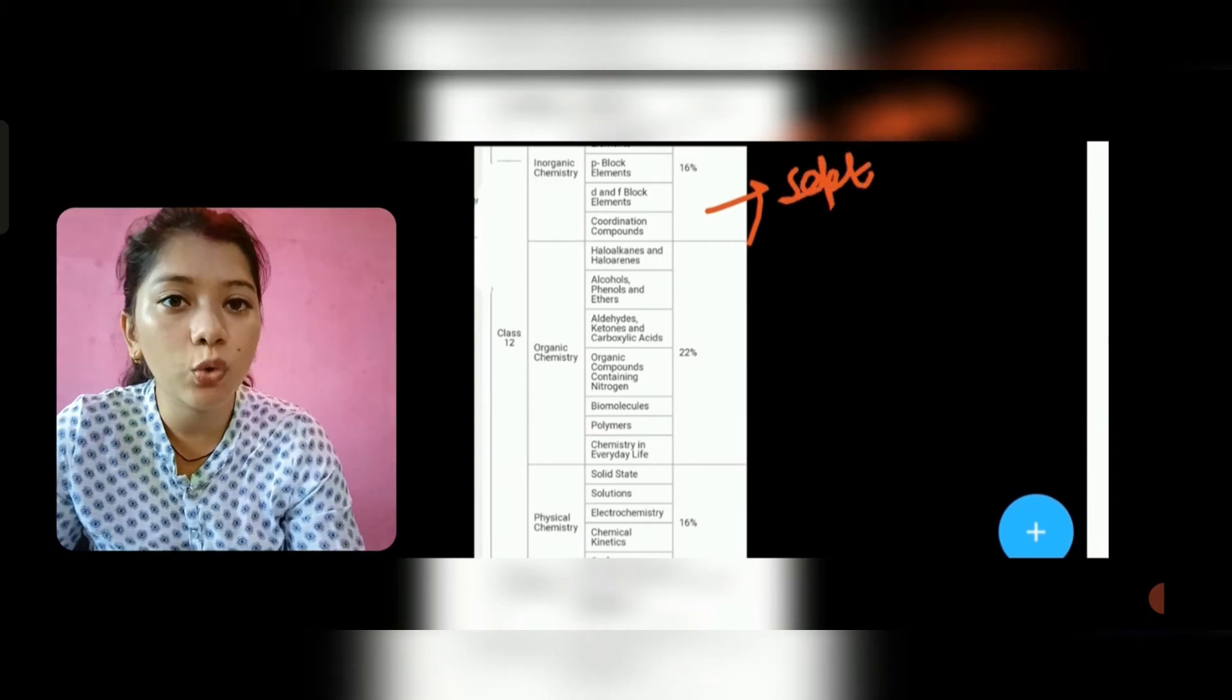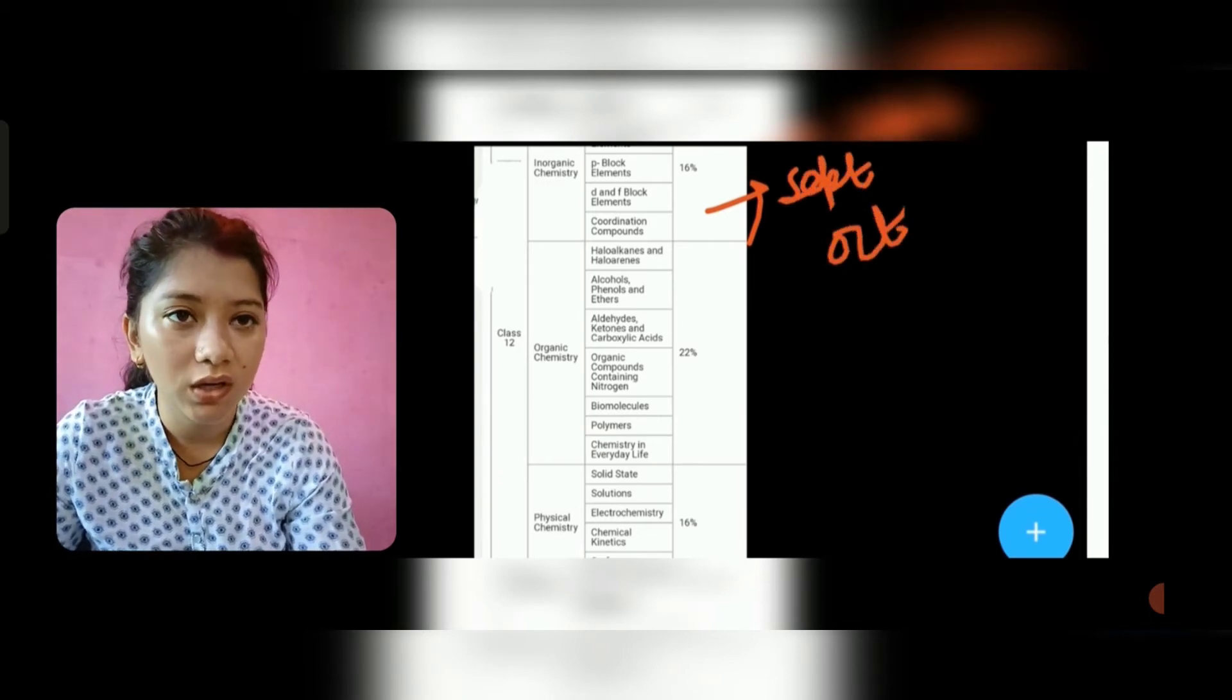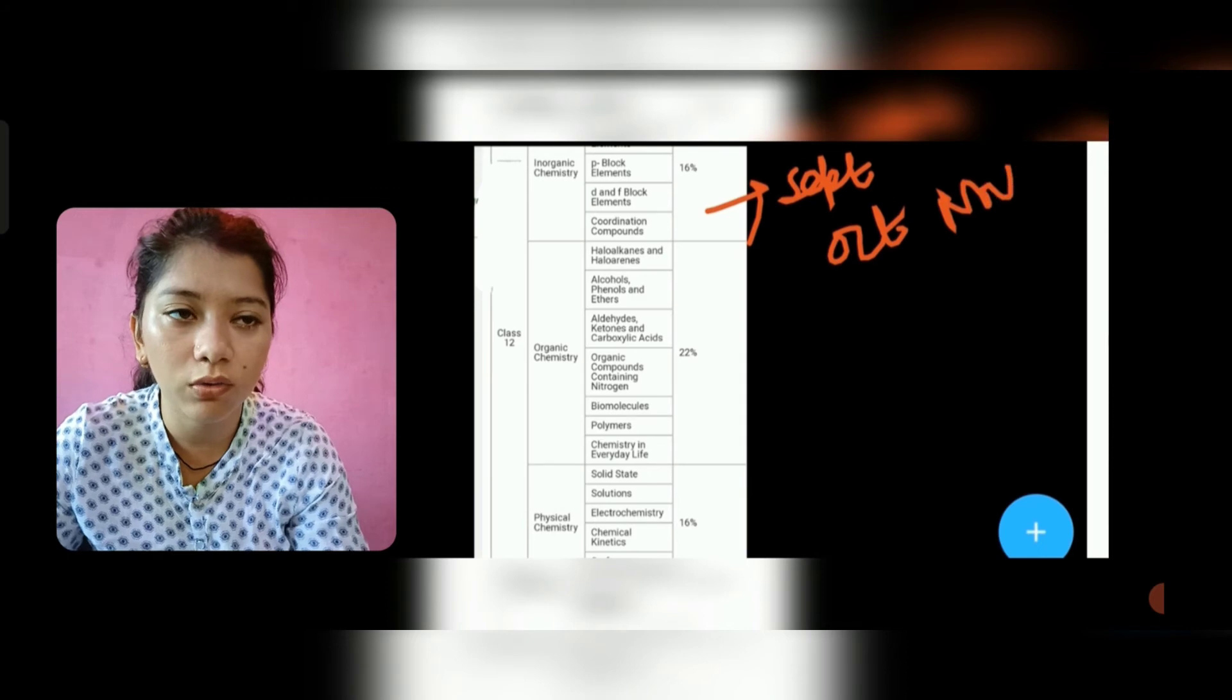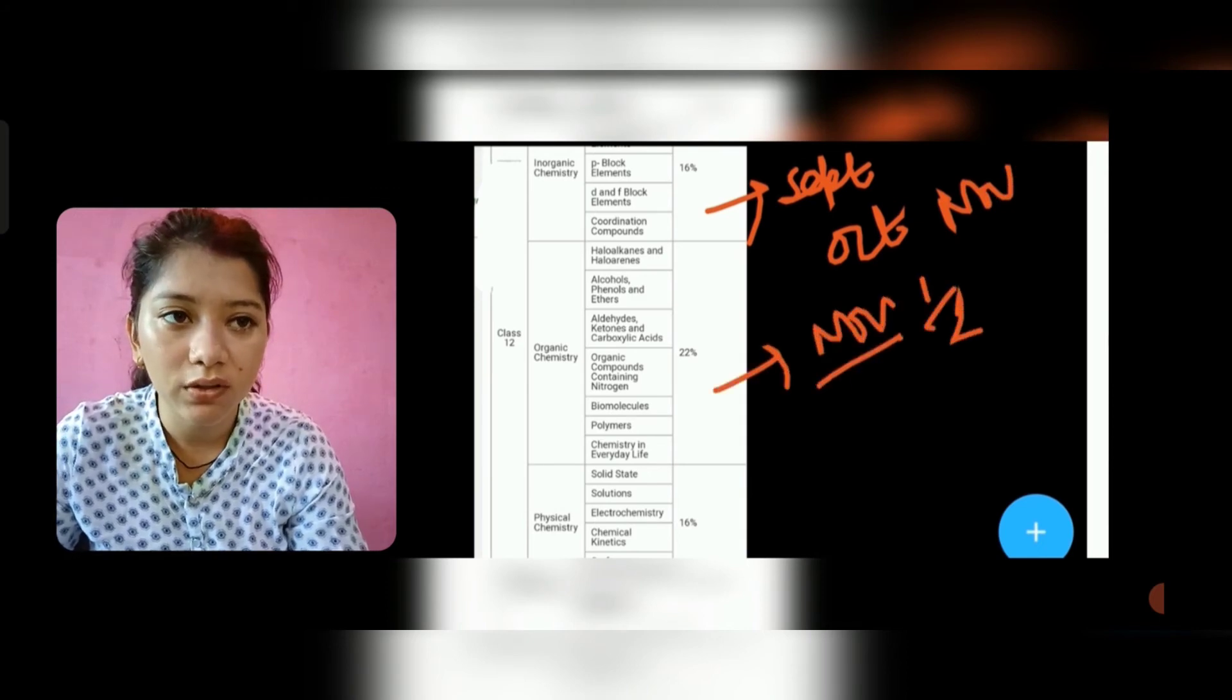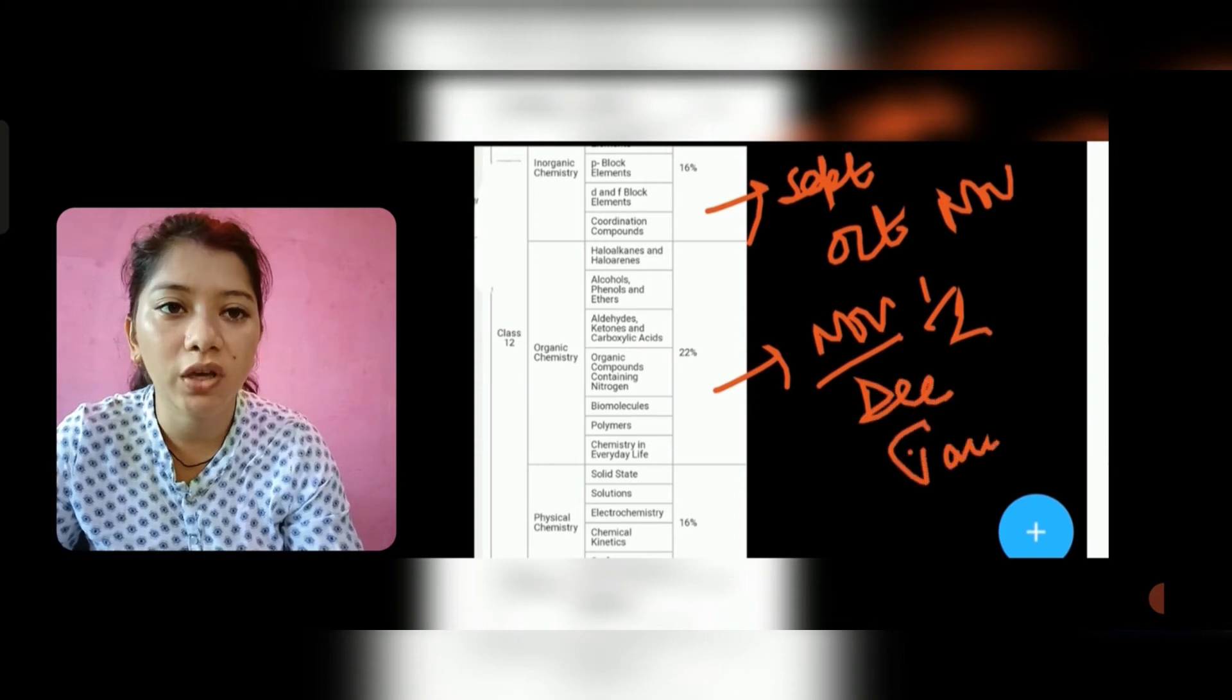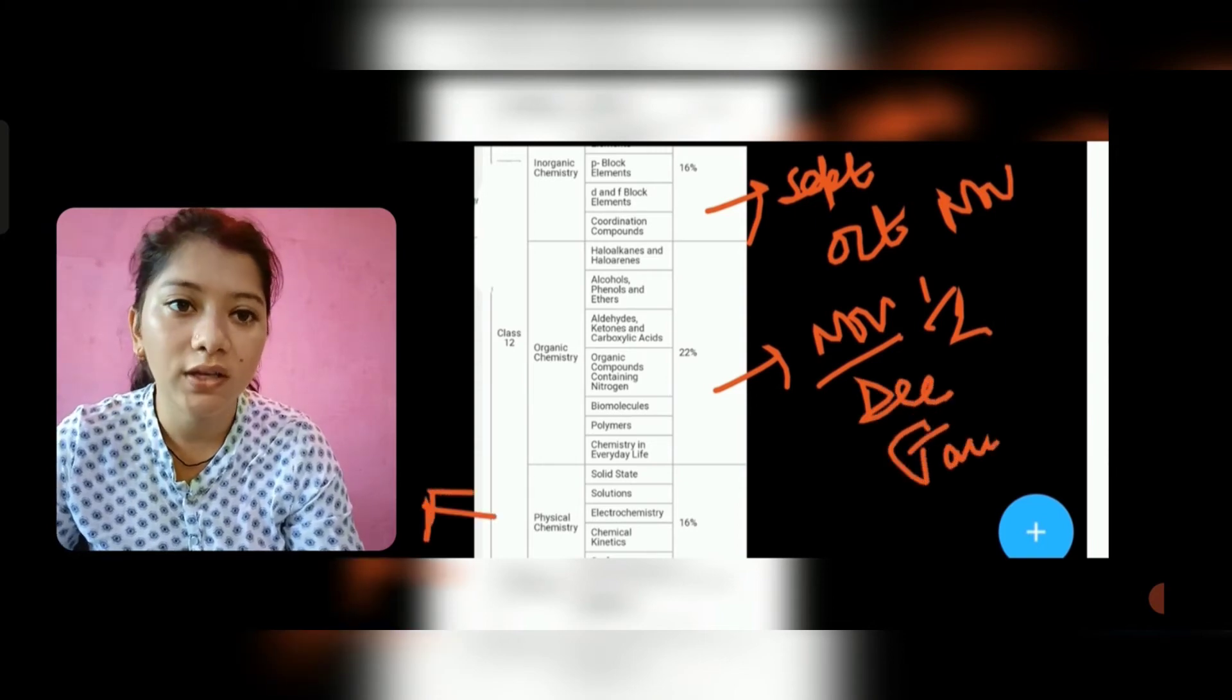On the 12th, we will cover the inorganic, organic, physical cover. On the 11th, we will cover the inorganic, physical cover, so that we will finish one portion. In September, we will finish inorganic. October, November, December, and January, we will cover the inorganic class 12th.